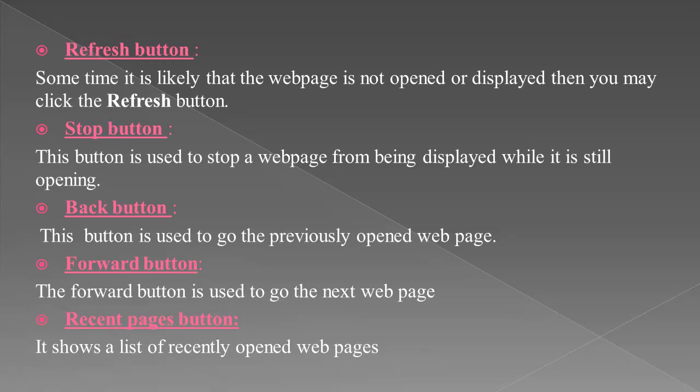Next is the forward button. The forward button is used to go to the next web page. Then there is the recent pages button. When you click on this button, it shows a list of recently opened web pages. This list also contains a history button which shows the list of web pages you have visited during a particular number of days.